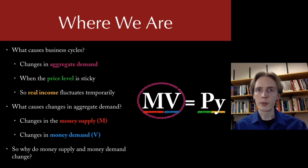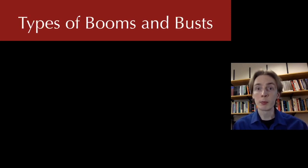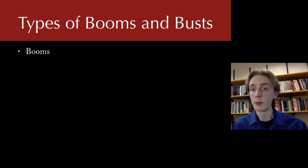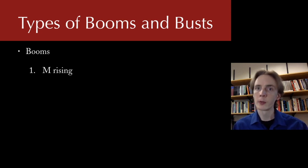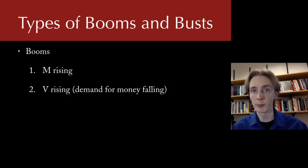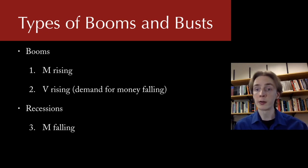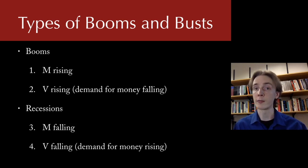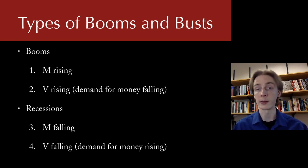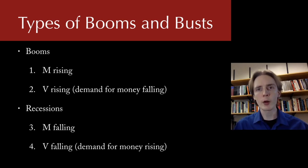So anytime aggregate demand changes, we know it's either the money supply or money demand. That's the question we're going to ask today. We're going to break this down into four basic types of business cycle events — two of them are booms and two are recessions. Booms can happen either because the money supply rises or money demand falls, meaning velocity rises. People are demanding less money, so they'd rather spend it than hold it, and the volume of spending rises. Recessions happen when the money supply falls or the demand for money rises, meaning velocity falls.